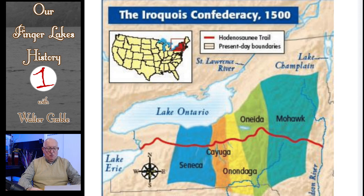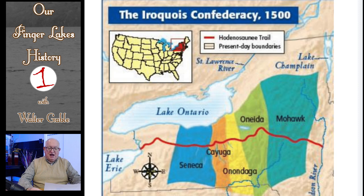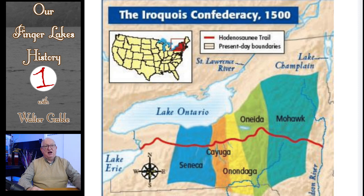Before there were European American or white settlements in the Finger Lakes region, this area was occupied by tribes of the Iroquois Confederacy of Haudenosaunee. In this visual, you see the location of these Haudenosaunee tribes in the Finger Lakes region, especially the Seneca, the Cayuga, and the Onondaga.